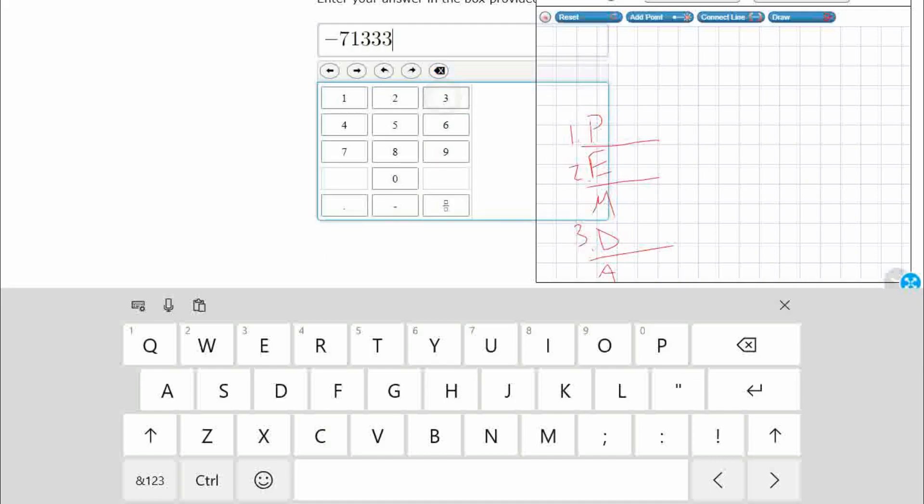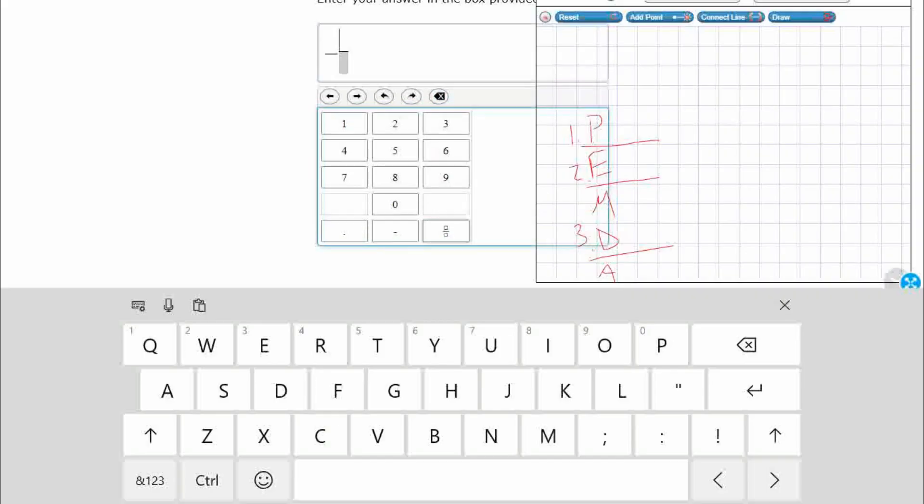Or if you want to make this an improper fraction, you could just do it like this. Negative, hit the fraction, 15, and then hit the denominator, halves. All of those work.